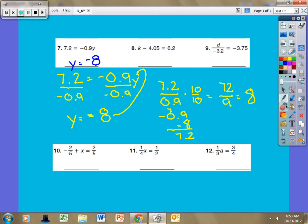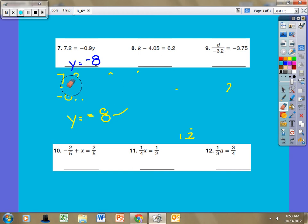All right. Let's take a look at another one real quick. Let me erase this work so I have some room to do another one. There we are. Okay, let's take a look at this one. It says k minus 4.05, k minus 4.05, is equal to 6.2.